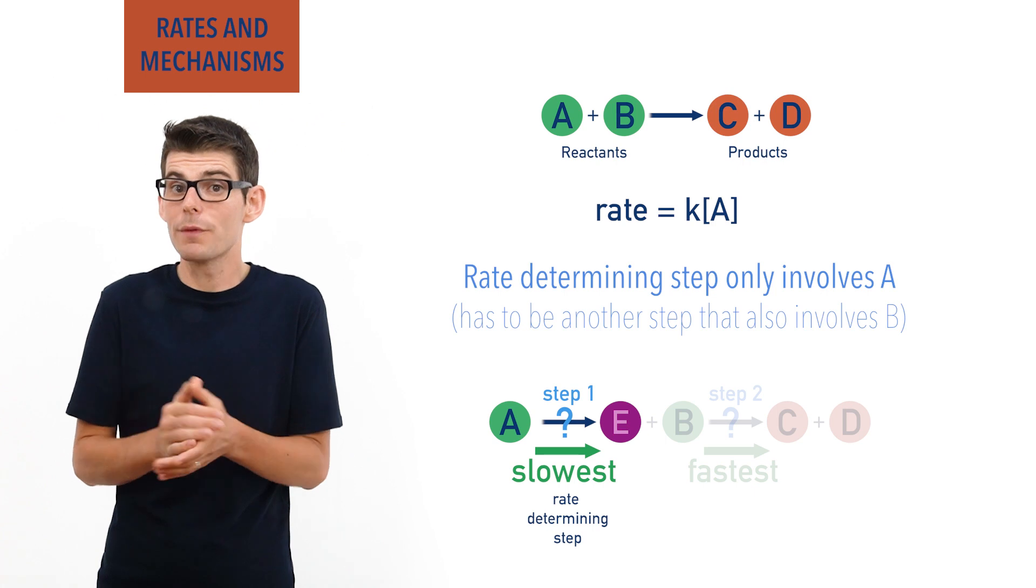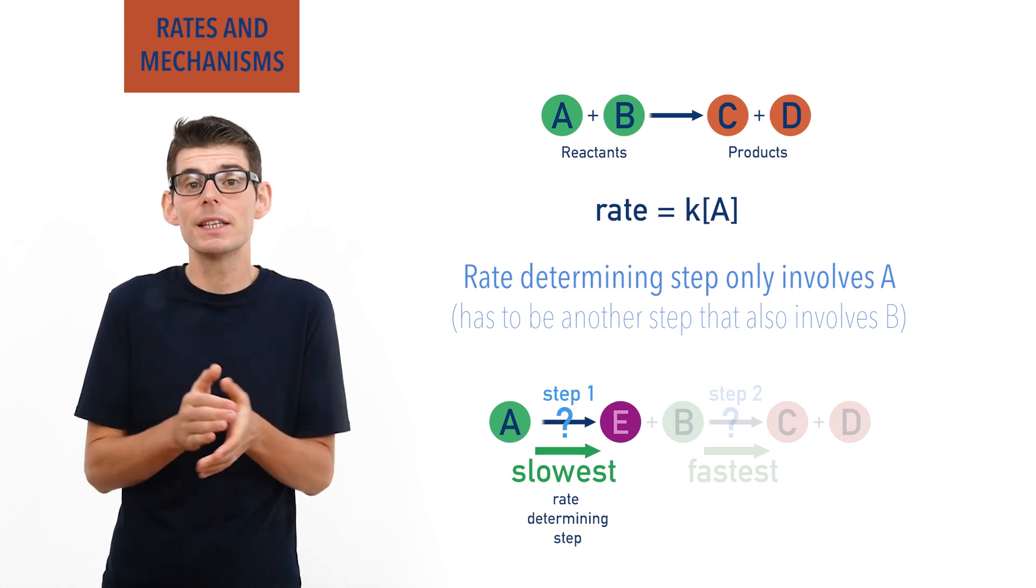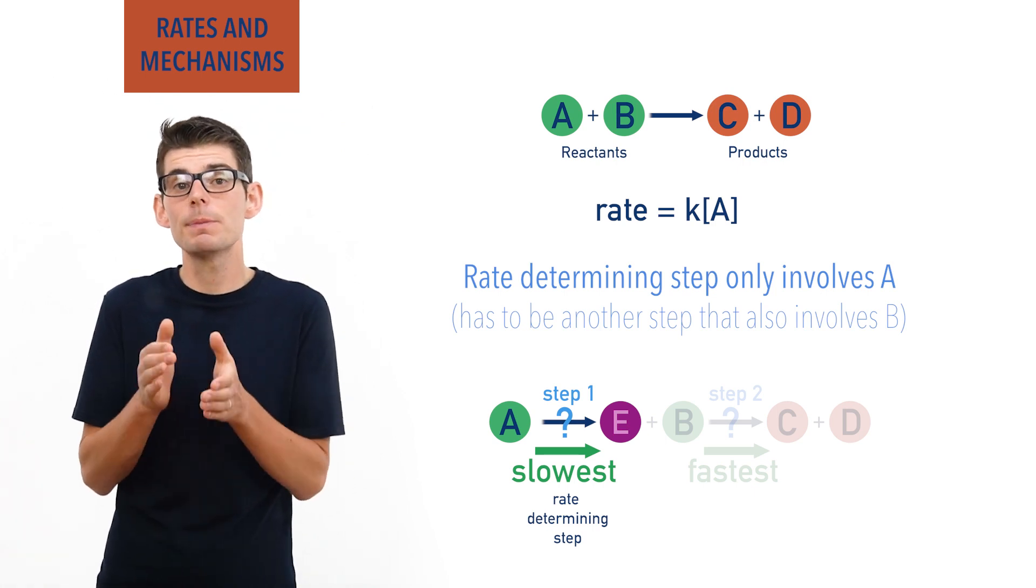This is why the concentration of B isn't in the rate equation, as it must be zero order.